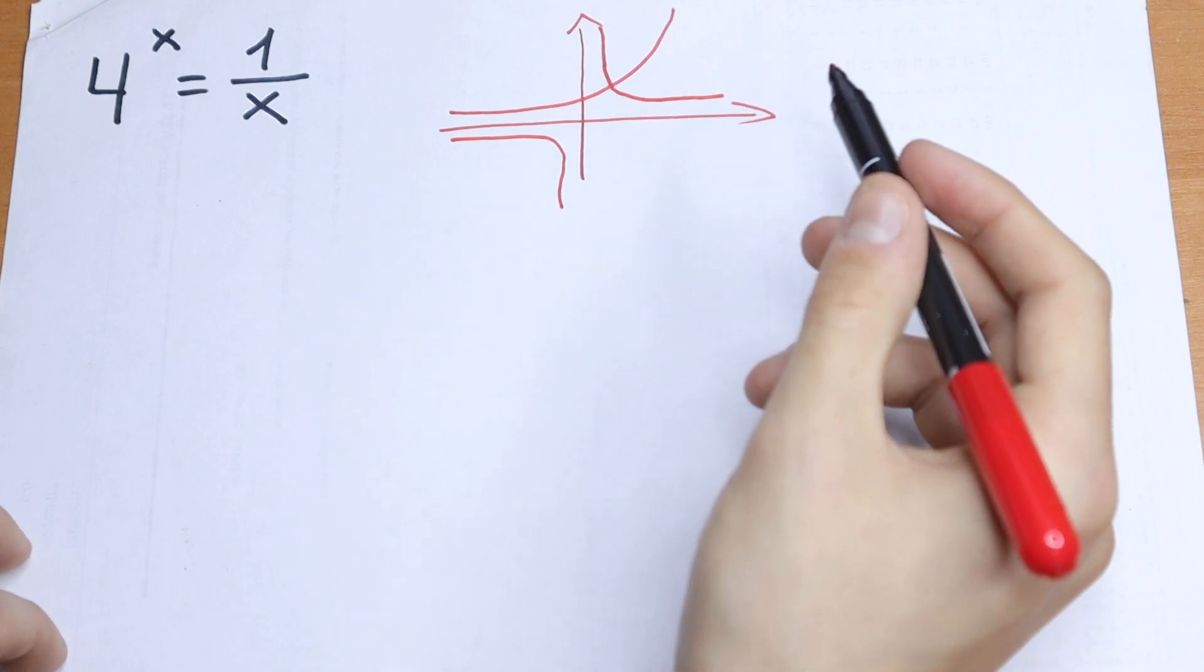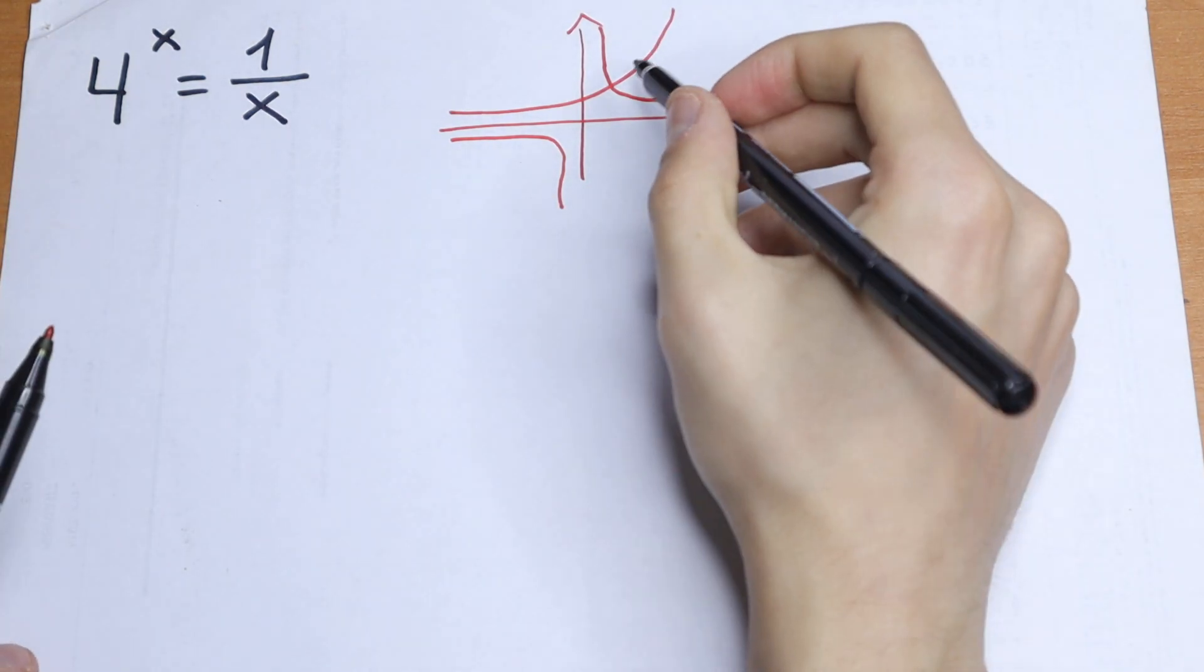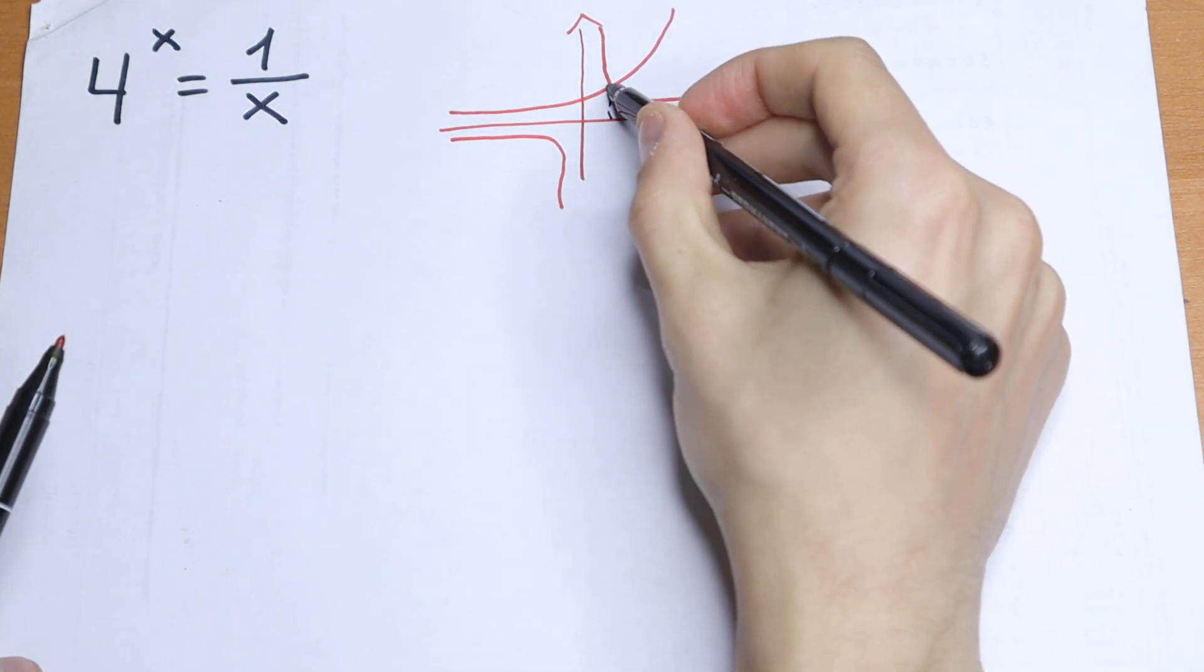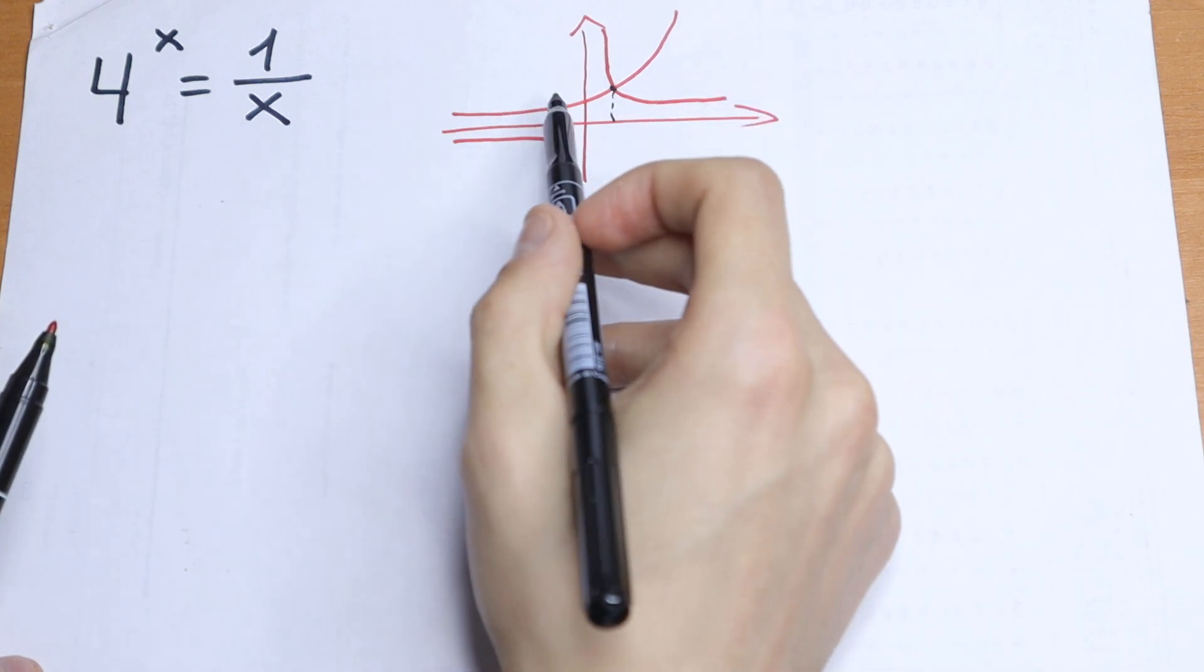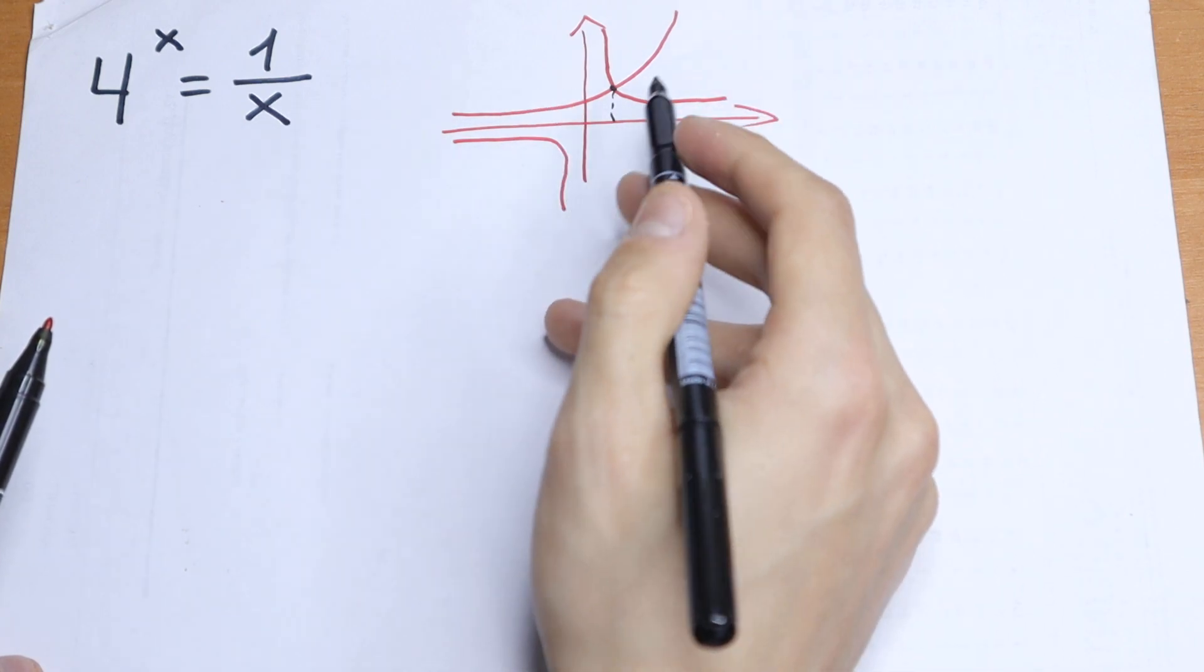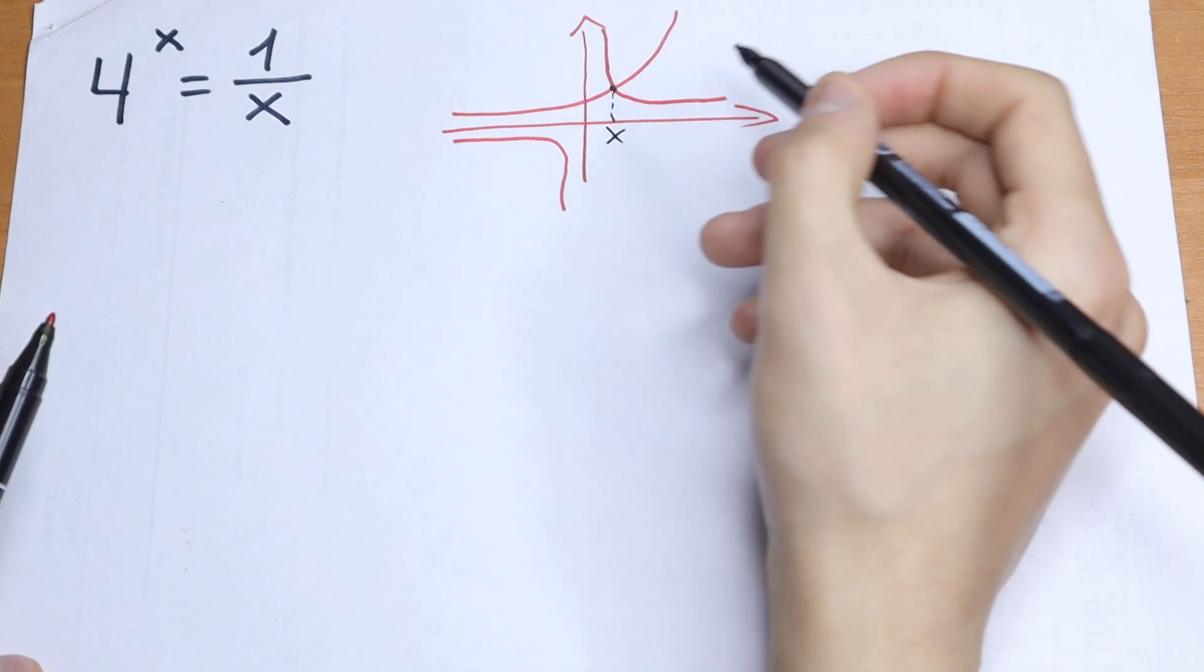So our branches intersect, as you can see, at one point right here. Right here they do not intersect because our exponential function does not exist right here. So right here will be our x.